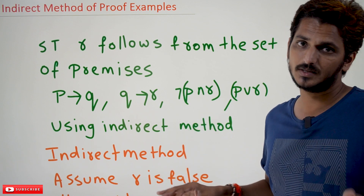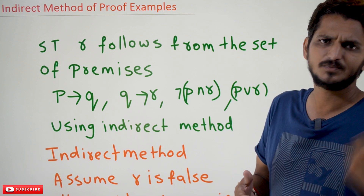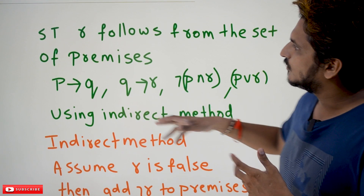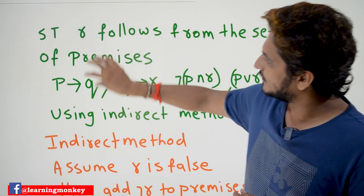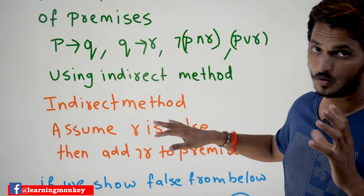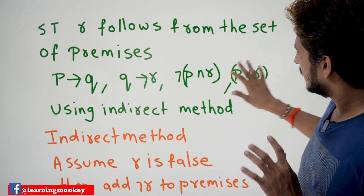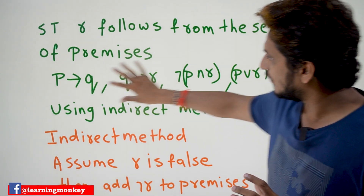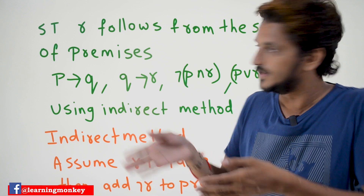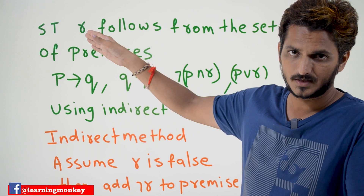If you understand what indirect method means, the remaining solution is very easy — we have done multiple examples previously. Let's try to understand: indirect method means these type of questions where we need to derive R from the given premises. Hope you know the basics — what premises means, what the meaning of this is. If the premises they have provided are some propositions, and if these propositions are true, then we can say that R is true. That is what we are showing in our previous classes.